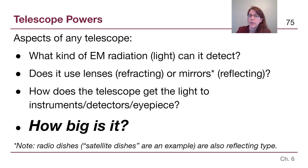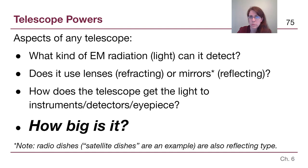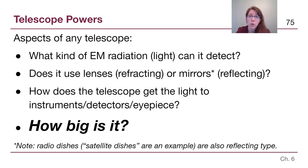We learned a couple of terms very briefly in the previous video — Newtonian focus compared to Cassegrain focus — that aren't essential to our curriculum, but it's worth recognizing if you're looking up information about a particular telescope, as they describe how light is being manipulated within the telescope tube. The single most important question when building a new telescope is how big it is, because every single one of the three telescope powers cares about size, and bigger is always better.